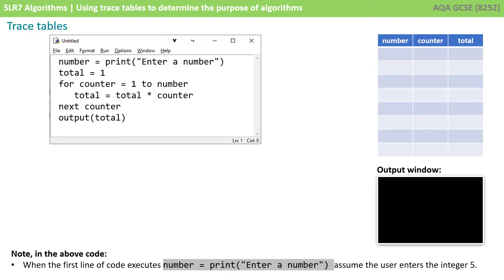You'll note down the bottom there, it says when the first line of code executes, number equals print enter a number, we're going to assume the user enters the integer five. We're going to work through this code line by line as if we were the computer executing this program. The first line of code executes and the user enters a five, so the contents of the variable number has changed. It now contains five. Whenever this happens, you update the row for that variable in the trace table. Number now holds five, and we've updated our output window.